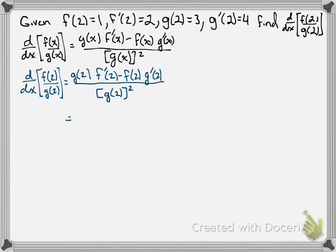So we'll go ahead and insert our values. For g of 2, we have 3, f prime of 2 was 2, f of 2 was 1, g prime of 2 was 4.